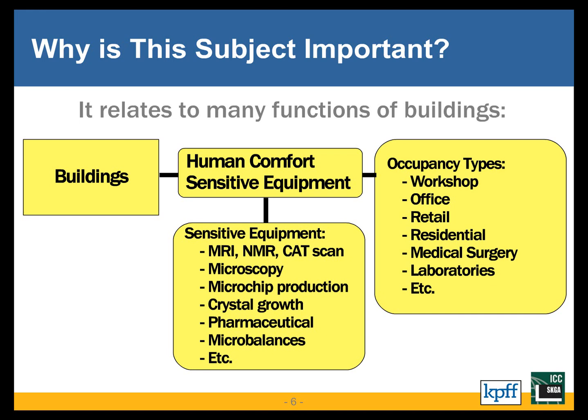The next level down would be an office. The de facto national guidelines for office occupancies do allow some vibrations that are feelable but don't rise to the level of actually being disturbing to most people. Going further down the list: retail occupancies like shopping malls, residential, medical surgery — we're getting into more stringent vibration requirements — and laboratories, and so on.